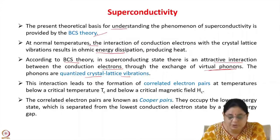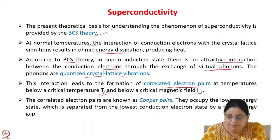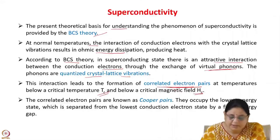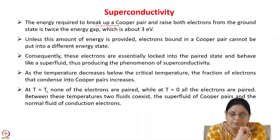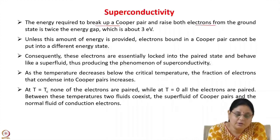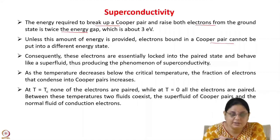This interaction leads to the formation of correlated electron pairs at temperatures below a critical temperature and below a critical magnetic field. These are known as Cooper pairs. Cooper pairs occupy the lowest energy state, which is separated from the lowest conduction electron state by a finite energy gap. The energy required to break up a Cooper pair and raise both electrons to a different state is twice the energy gap, which is about 3 electron volts. Unless this much energy is provided, the electrons bound in a Cooper pair cannot be put into a different energy state. These electrons are essentially locked into the paired state and behave like a superfluid, producing the phenomenon of superconductivity.